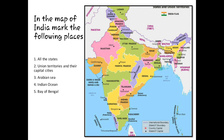In this first map, you are supposed to mark all the states and the union territories and their capital cities. You are supposed to mark a minimum of 6 states and all the union territories.